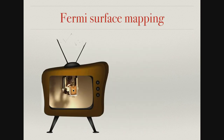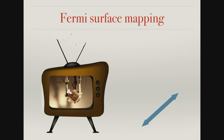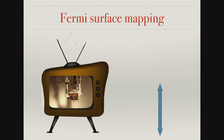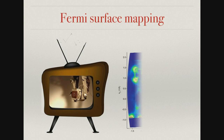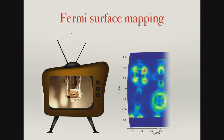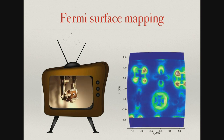Instead of looking at just a momentum-energy distribution, you can look at just the top of this distribution, and if you rotate the sample schematically like this you can get access to the Fermi surface map — you pick up just the top intensity and then you get the Fermi surface map.